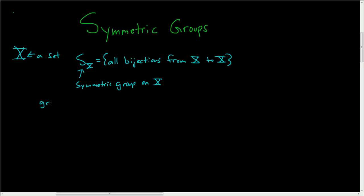The group operation in this group is function composition. This is actually a binary operation on this set. In other words, if you take a map F and a map G in this set, then the composition of those maps is also a bijection, and therefore it's also in the set.